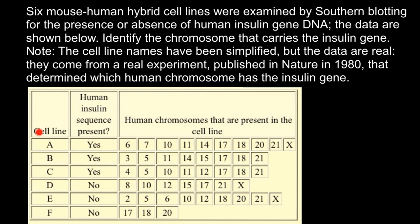Here are the names of the cell lines. In cell lines A, B, and C, we can find human insulin. In cell lines D, E, and F, we cannot find this human protein. Let's now analyze this table. Cell line F has chromosomes 17, 18, and 20, and still does not have human insulin. That tells us this gene is not on chromosome 17. Since chromosome 17 is also present in other cell lines, we can cross it out.